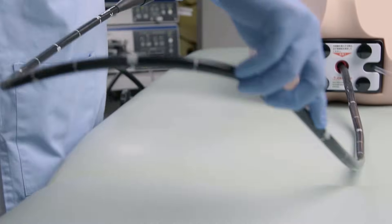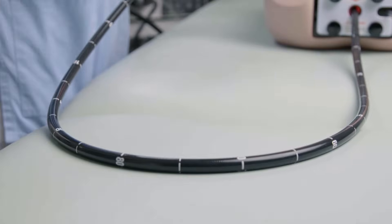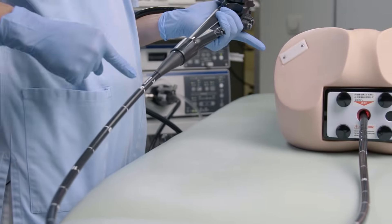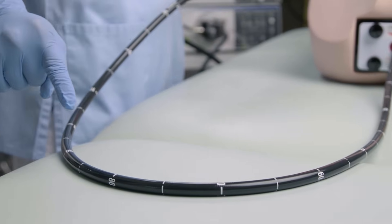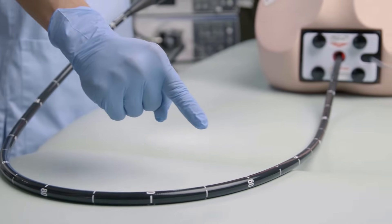In order to control the colonoscope properly, make sure that the long insertion tube always lies on the table and not hanging down.